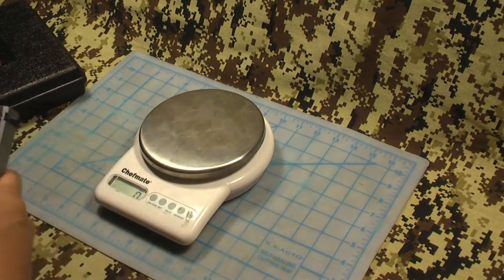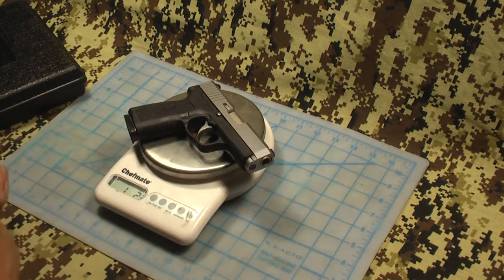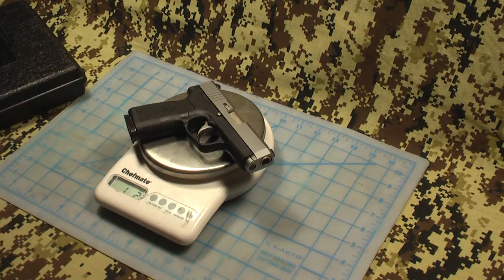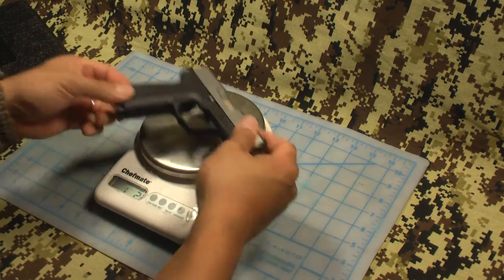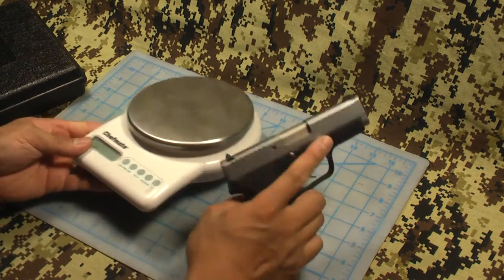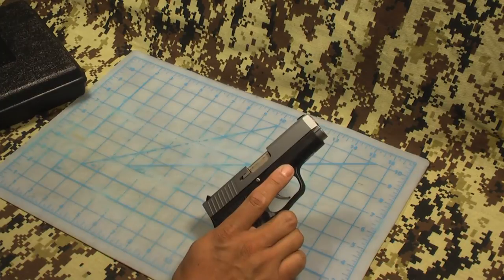With the magazine, no ammo, we are looking at 1 pound 2 and 5/8 ounces, that is 18 and 5/8 ounces. So it is relatively light. It is not the lightest pistol you can find, but it is relatively light.